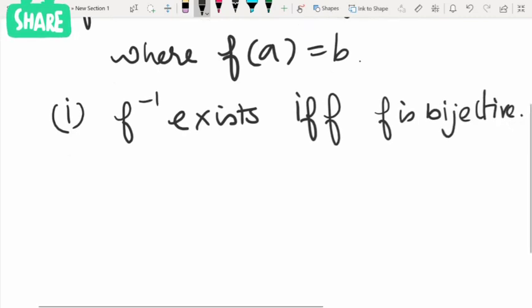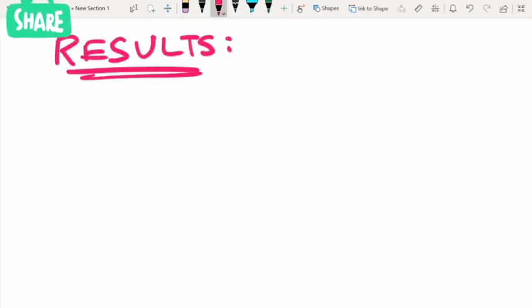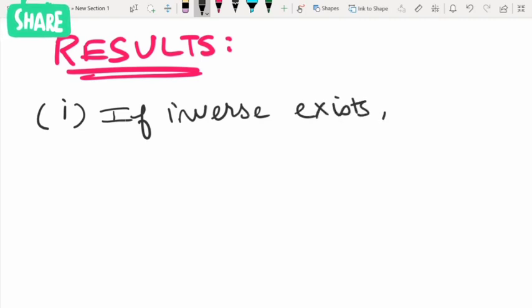Only then we can talk about the inverse function. Let us see some results on inverse functions. The first result is: if the inverse exists, then it will be unique. There exists a unique inverse.